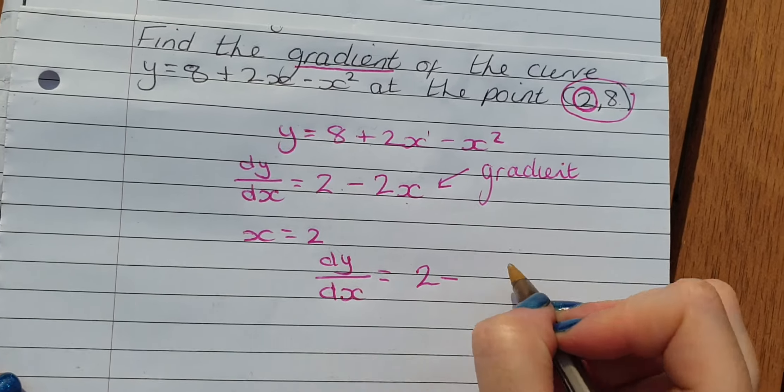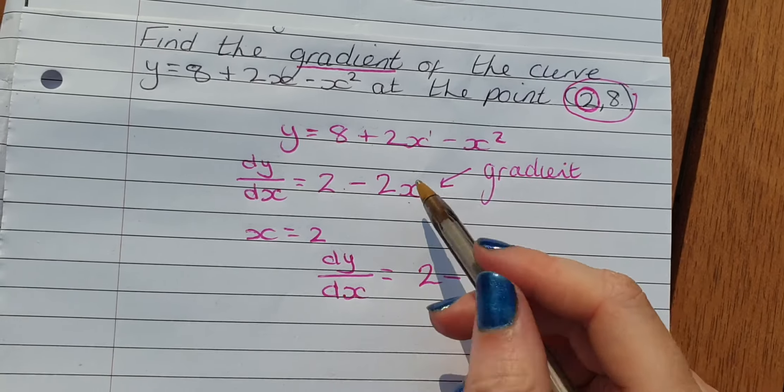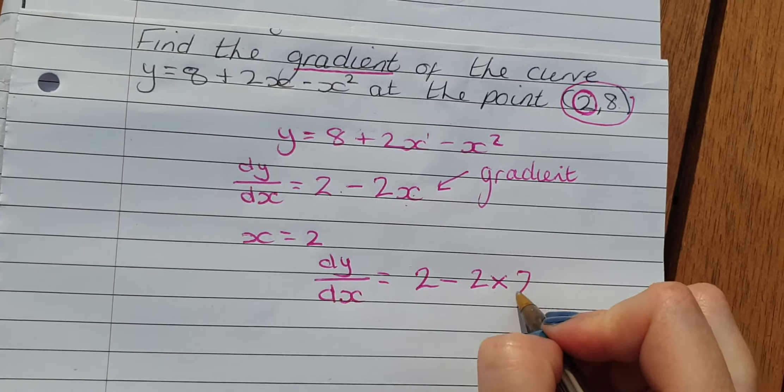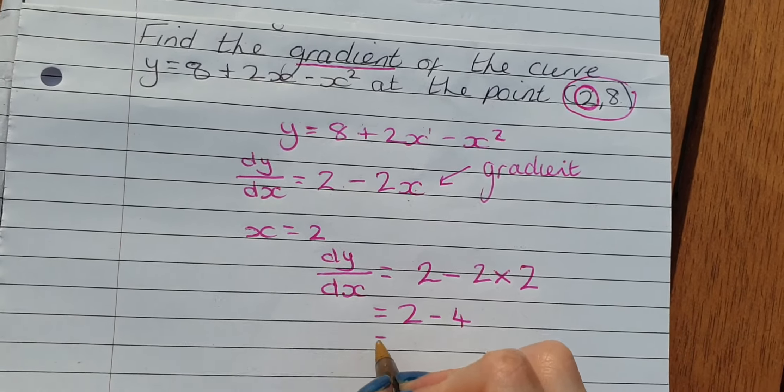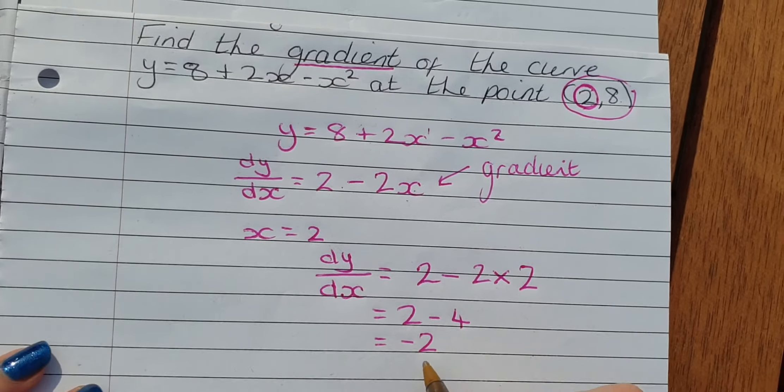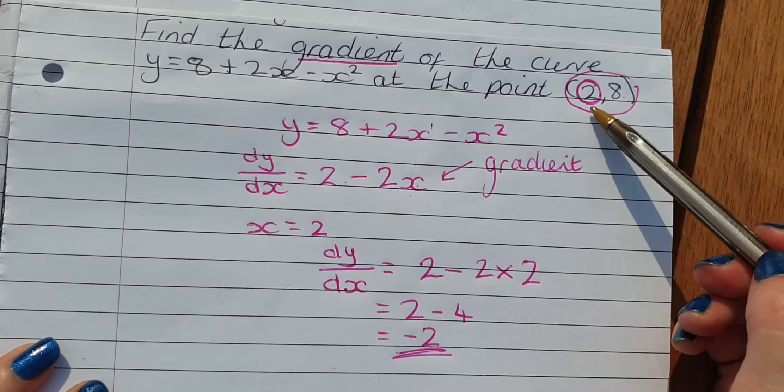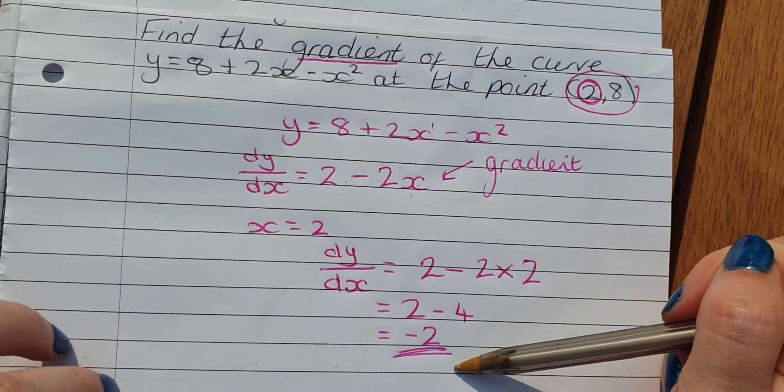2 minus 2 times what x is, which is 2. So we get 2 take away 4, which is minus 2. So the gradient at this point is minus 2.